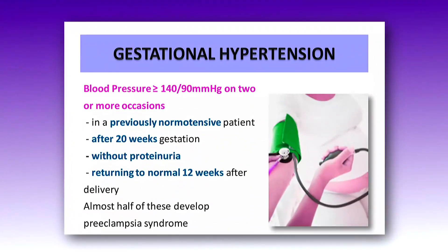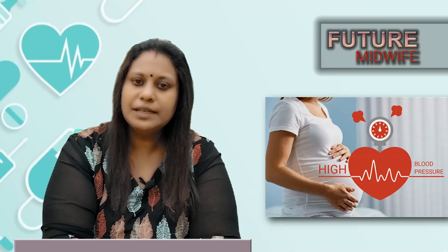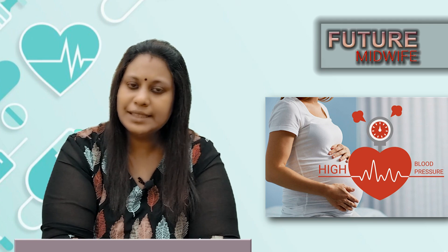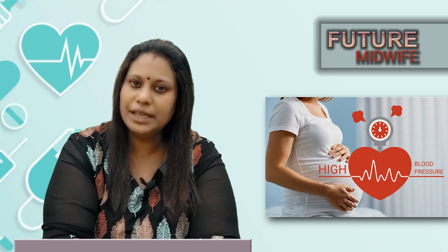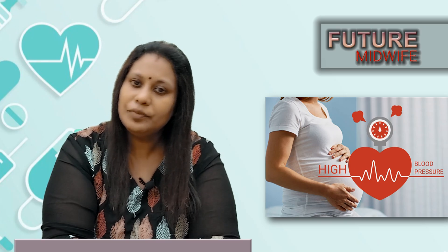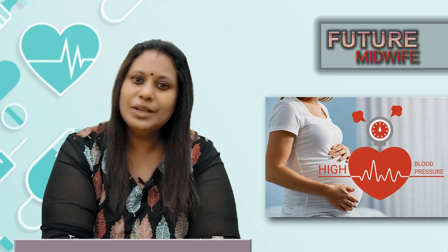First, we'll discuss gestational hypertension. In this case, the blood pressure should be more than or equal to 140/90 mmHg on two or more occasions, and it should occur in a previously normotensive patient. It usually occurs after 20 weeks of gestation without proteinuria, and it can return to normal 12 weeks after delivery. Almost half of these cases can develop preeclampsia symptoms in the future. There is no prior history of hypertension, and there is no proteinuria in this category.